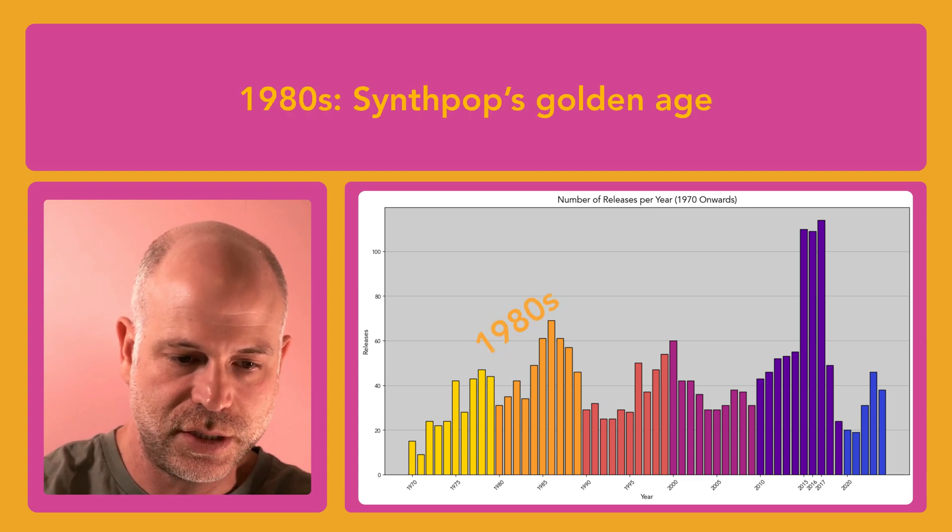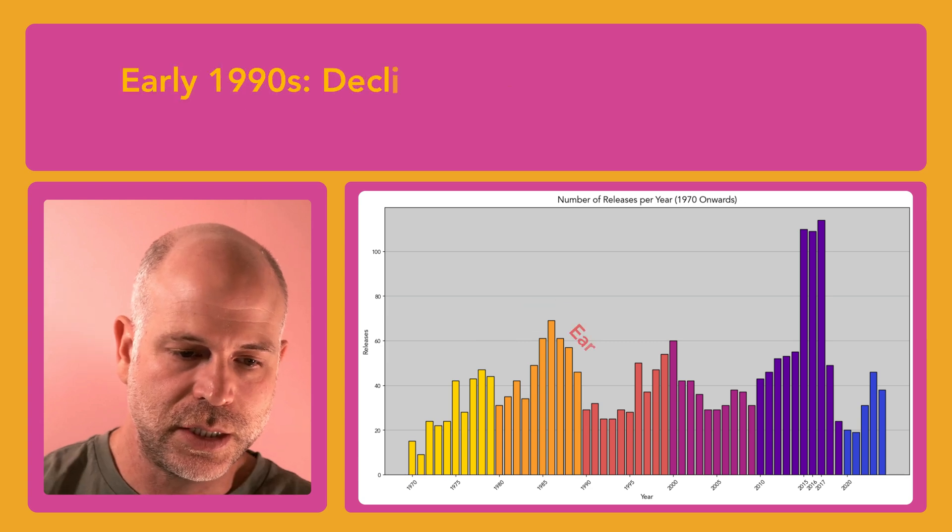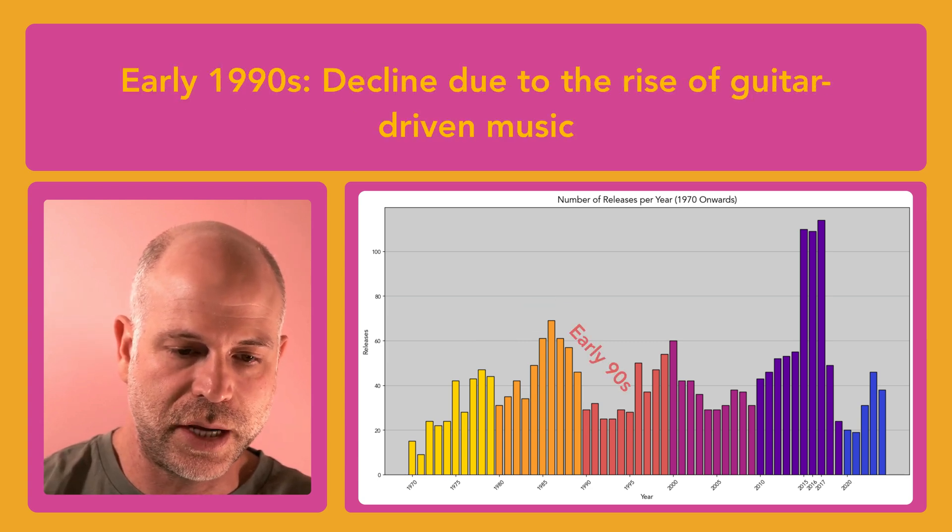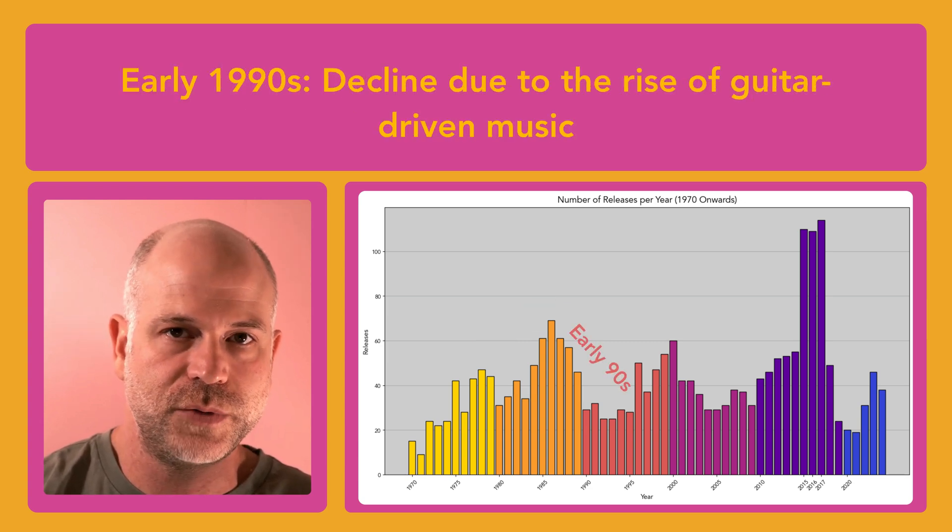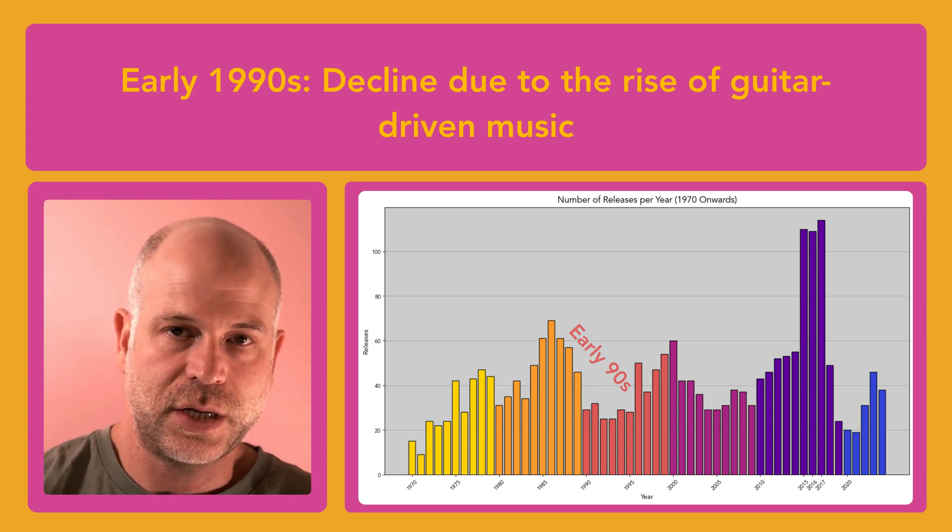The 80s were obviously the golden age of synth pop, which contributed to a serious boost in their releases, as they became essential to pop music. In the 90s, we can see some decline due to the rise of guitar-driven music, as alternative rock and grunge dominated the 90s, and the releases declined.